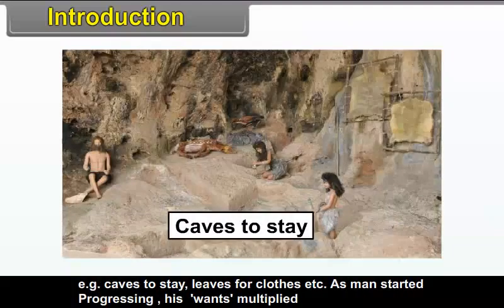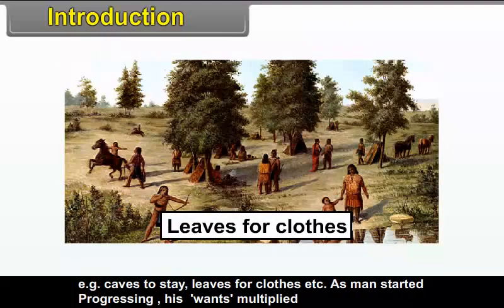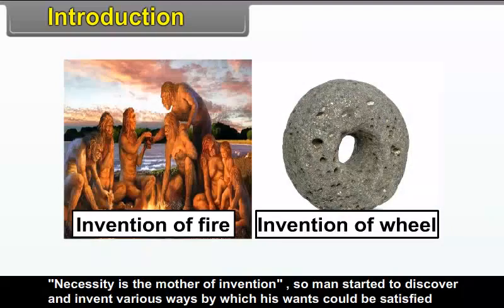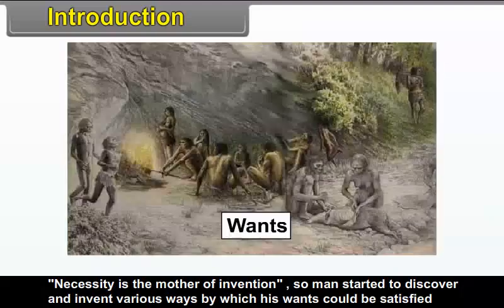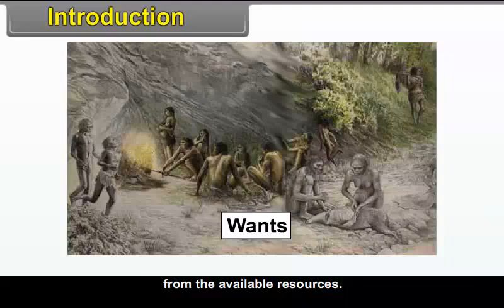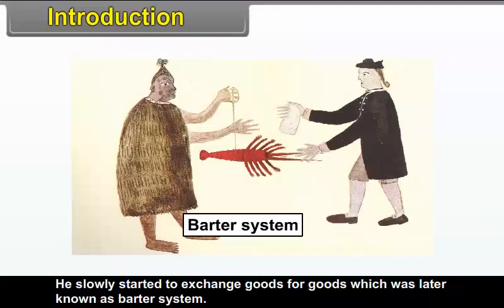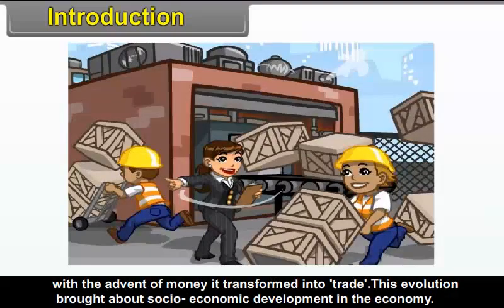For example, caves to stay, leaves for clothes, etc. As man started progressing, his wants multiplied. Necessity is the mother of invention, so man started to discover and invent various ways by which his wants could be satisfied from the available resources. He slowly started to exchange goods for goods, which was later known as the barter system. With the advent of money, it transformed into trade.